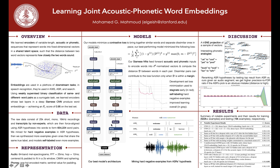Our best model is a Siamese CNN network. An important aspect of training is a semi-supervised self-training method to learn hard negatives during training. Every three epochs or so, we score the embeddings, identify the hard negatives, and add them back to the training set.